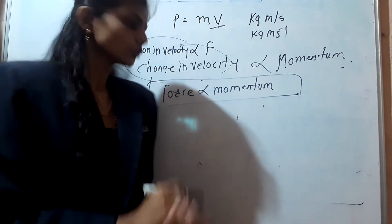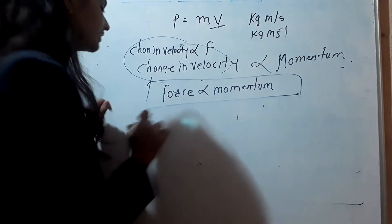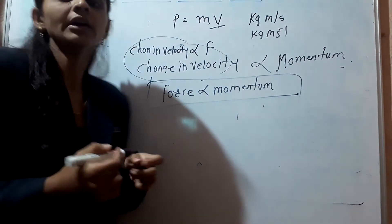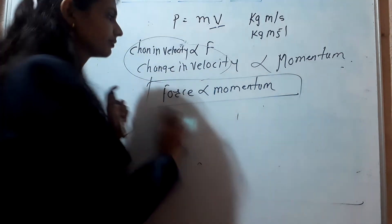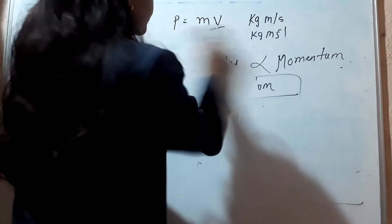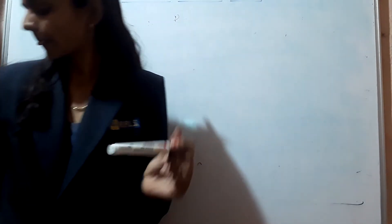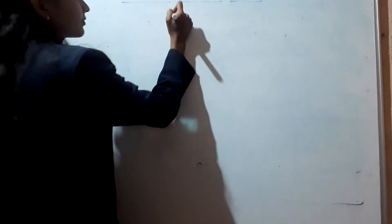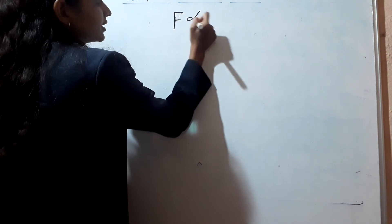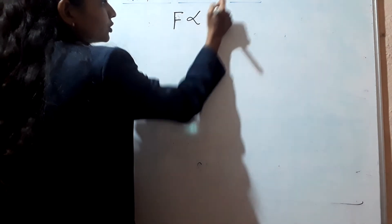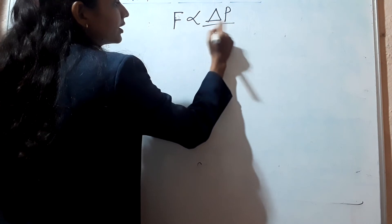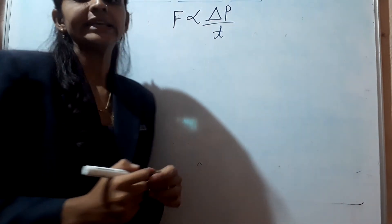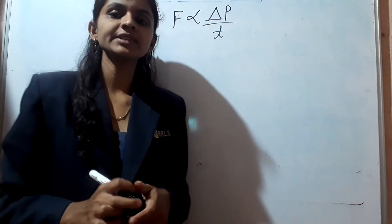So here we have one formula. F is directly proportional to the rate of change of momentum, which is delta P upon t. Delta P upon t indicates the rate of change of momentum with respect to time.